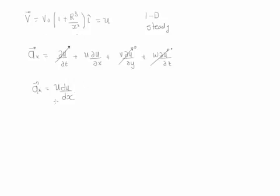We take this equation and multiply it out so it's easier to take the derivative. We have V_0 plus V_0 R cubed over x to the third. This is the velocity.